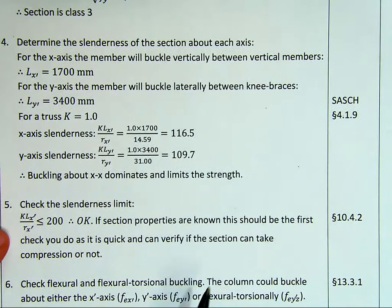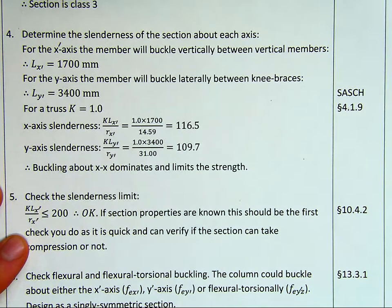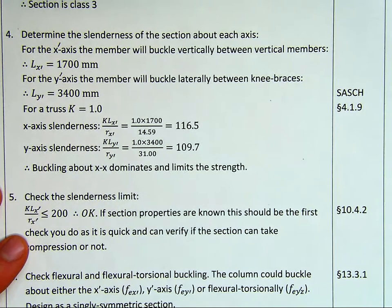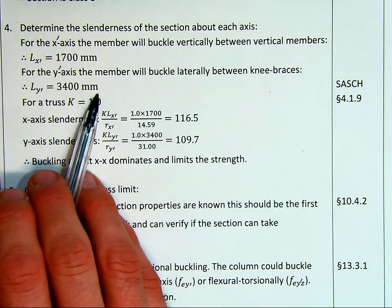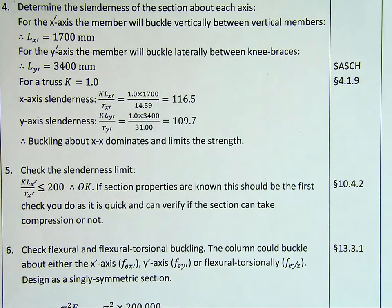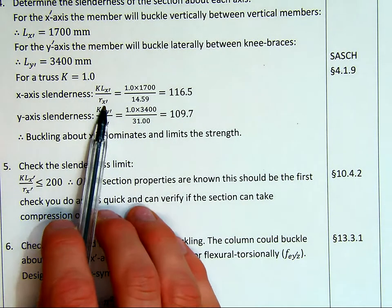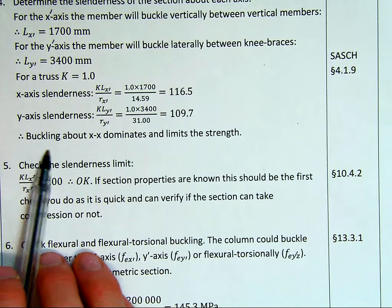We're now going to determine the slenderness of the section about each axis. That's the KL over R. For the X-primed axis, the member will buckle vertically between vertical members. For the Y-primed axis, the member will buckle laterally between the knee braces. So LY-primed is 3400, LX is 1700. We've discussed this previously and explained that for truss, we normally take our effective length as one. Some older codes and older engineers will use 0.85, accounting for the stiffness of the gusset plate, but generally we don't do that. You should use a value of one. So our X-axis slenderness, KLX-primed over R, we get 116.5, Y-primed, 109.7.